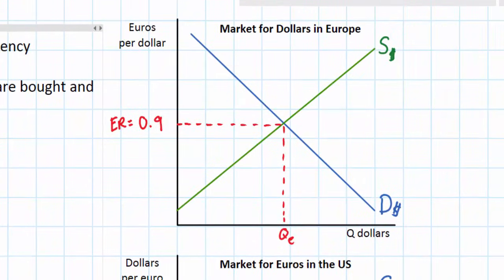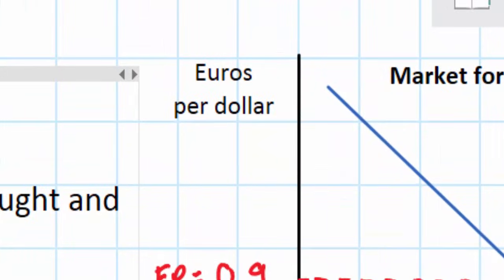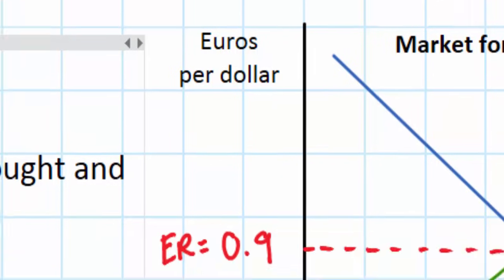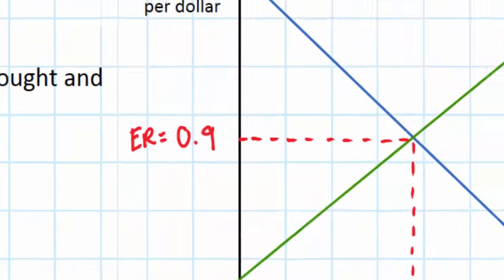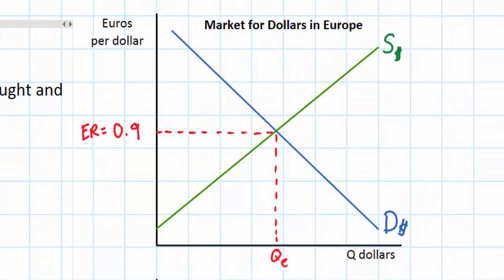On the right are two examples of foreign exchange markets in which the demand and supply of a currency determines its value in another country. On the top we have the market for US dollars in Europe. The price axis is labeled euros per dollar. The exchange rate of dollars in Europe is 0.9 euros, or 90 euro cents. The blue line represents the demand for US dollars, and the green line represents the supply of US dollars in Europe.